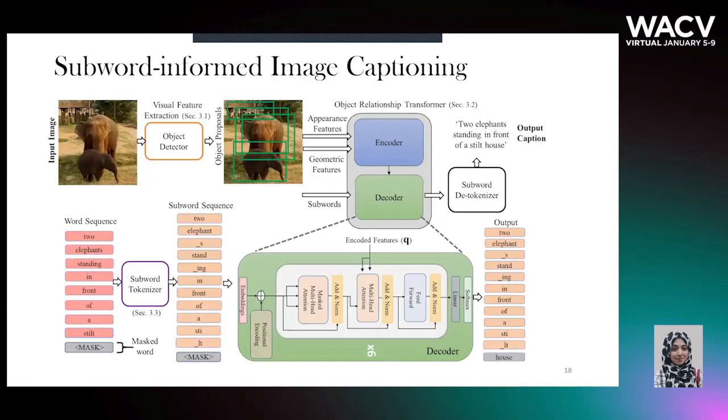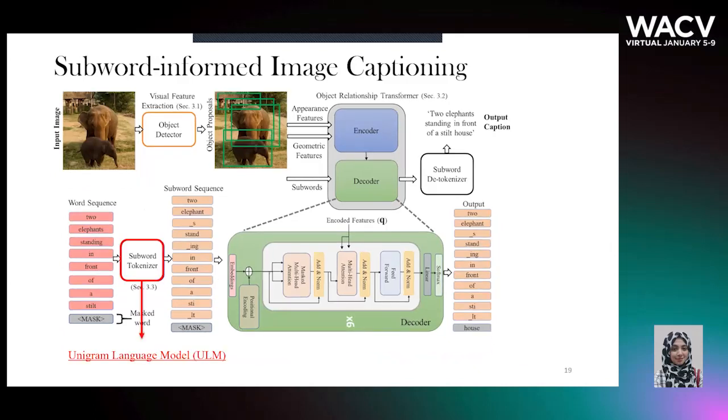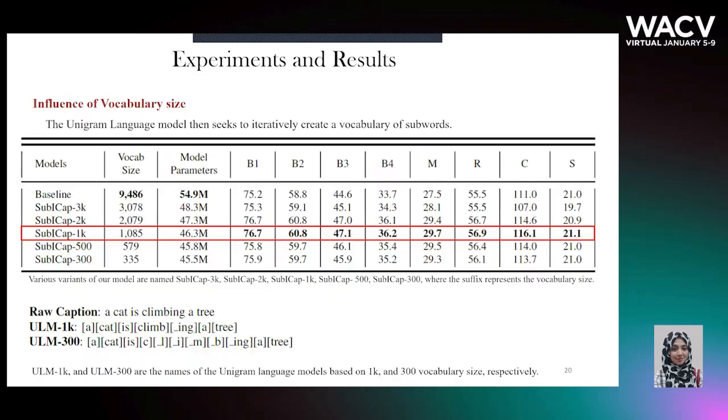In this work, we transform an existing word level image captioning model into a subword model using the unigram language model as a tokenizer.